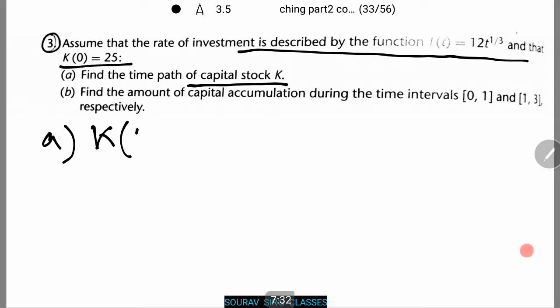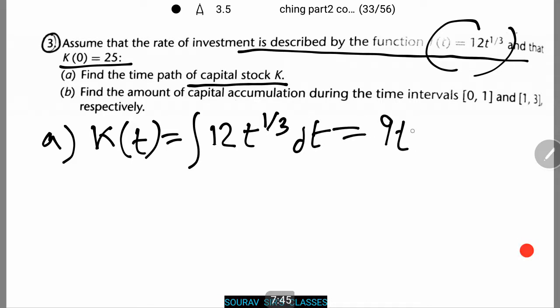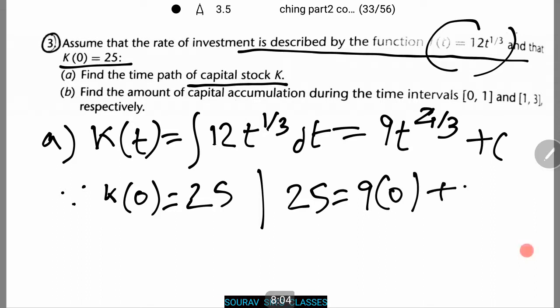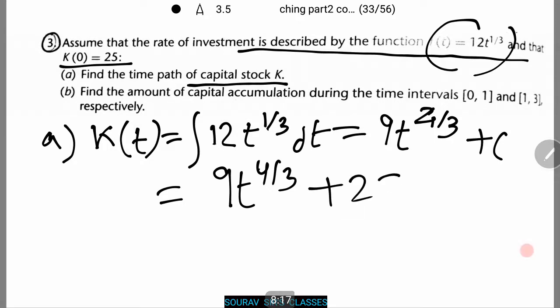Because K(t) is nothing but integration of this function which is 12t to power 1 by 3 dt, which comes to be 9t to the power 4 by 3 plus C. Since K(0) equals 25, therefore we have 25 equals 9 into 0 plus C giving us C equals 25. Similarly like the last question we put the value over here giving us 9t to power 4 by 3 plus 25.